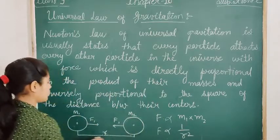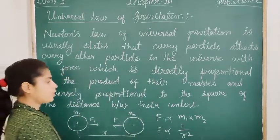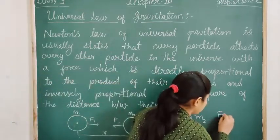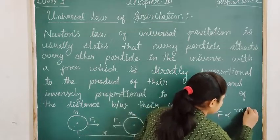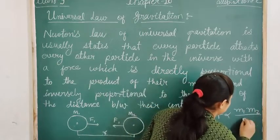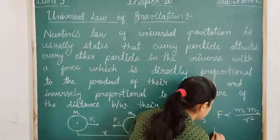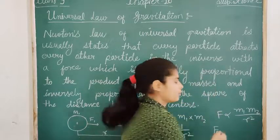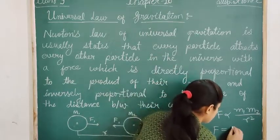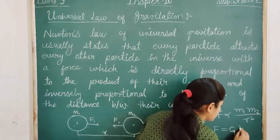The formula is F equals G times M1 times M2 upon R squared, where G is the gravitational constant.